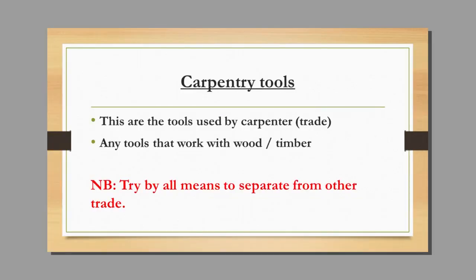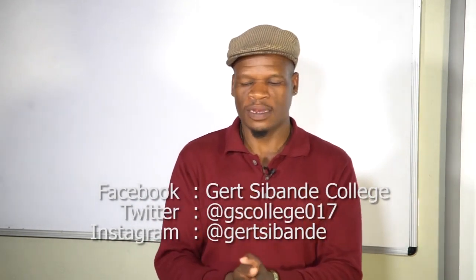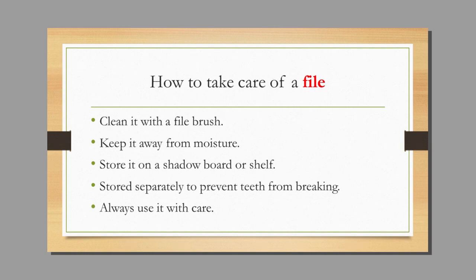Carpenter tools are the tools used by the carpenter. You must know exactly how many of those tools need to be within your facility. Regarding how to take care of your file — we are talking about the file that sharpens steel or metal tools like knives. After you have used it, clean it with a file brush or wire brush, keep it away from moisture to prevent rust, store it on a shadow board or shelf in a storeroom, and don't mix it with other tools as it will damage the teeth.